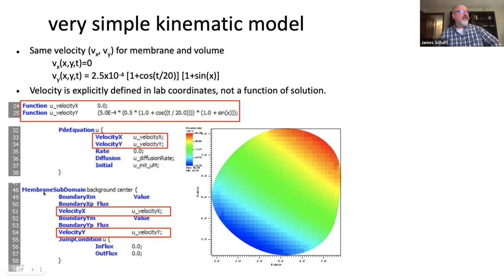And if you notice down on line 48, in the next block, we have a membrane subdomain. So the first one was in the volume here, we're looking at the motion, not of a molecule that's in a field, but we're looking at the motion of the membrane itself. So we have a membrane subdomain between the two volumetric components, background and center. That was just what they were called. And we see velocity X and velocity Y, the two components of a vector field. And the membrane is evolved in the direction of that vector field.